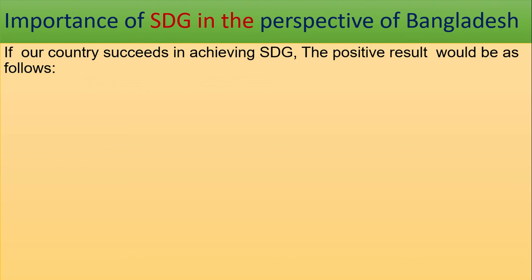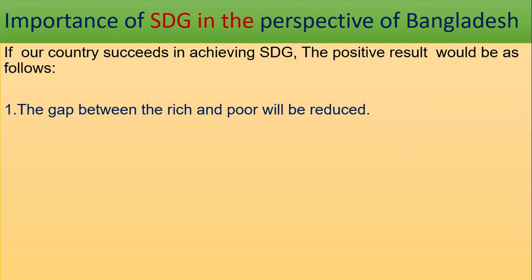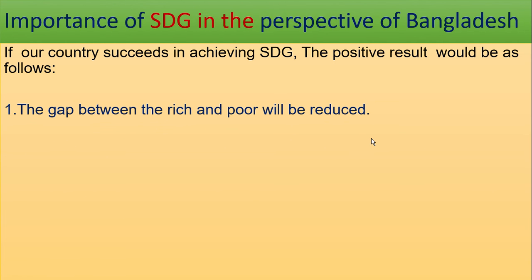Now, the importance of SDG in the perspective of Bangladesh. If our country succeeds in achieving SDG, the positive results would be as follows: first, the gap between the rich and poor will be reduced. Bangladesh has already succeeded in achieving MDG and has turned into a lower middle income country.